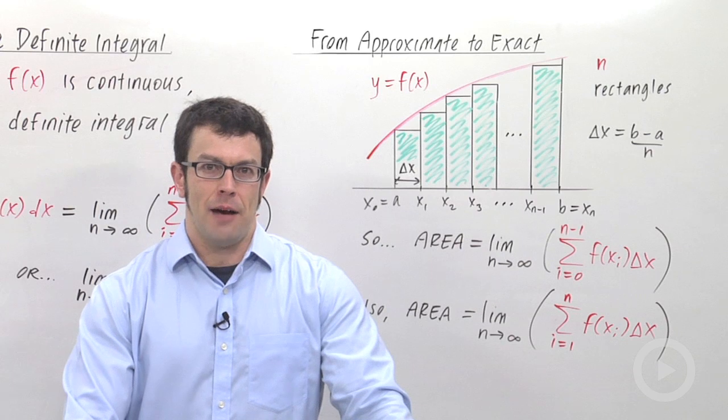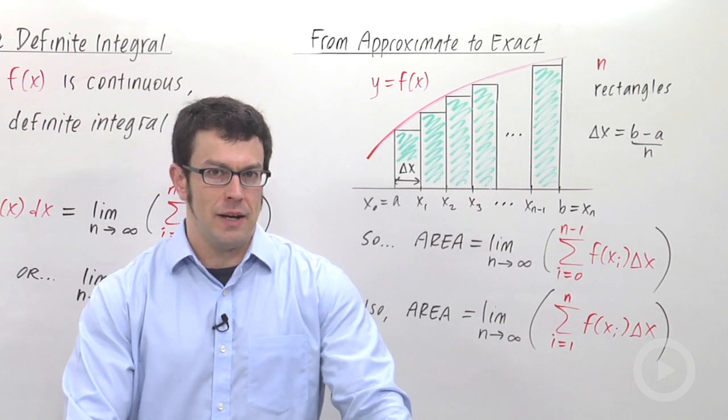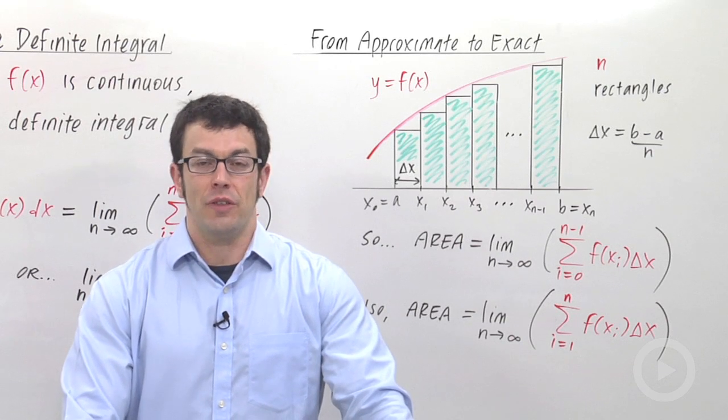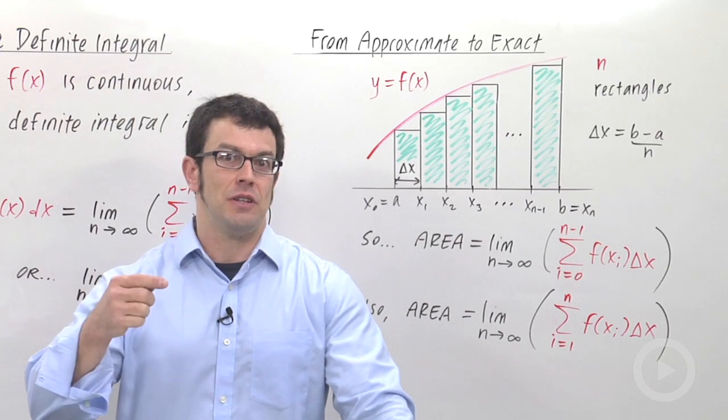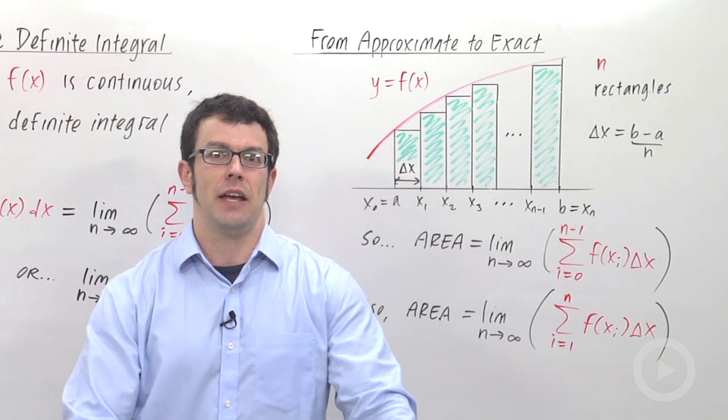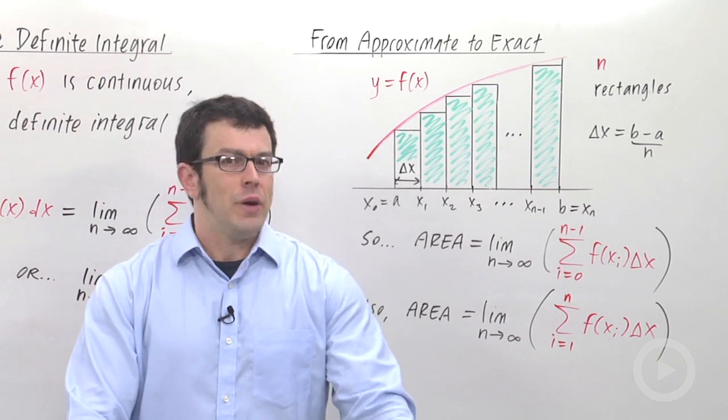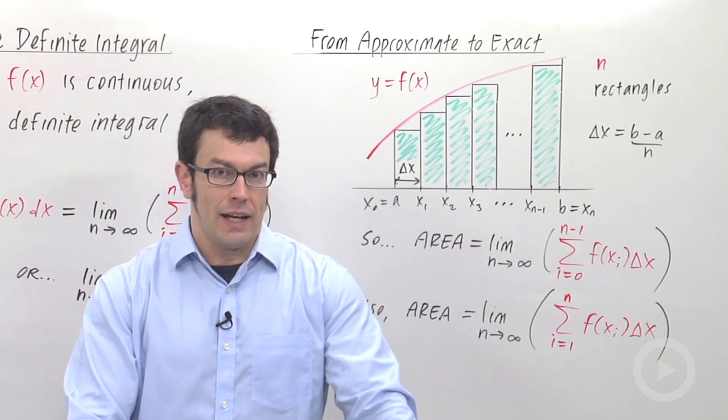So just a quick recap. We've been talking about approximating the area under a curve with a left-hand sum. That's a rectangular sum that uses rectangles that reach up to the left and touch the curve at the left-hand corner. But we can also do the same thing with right-hand sums.